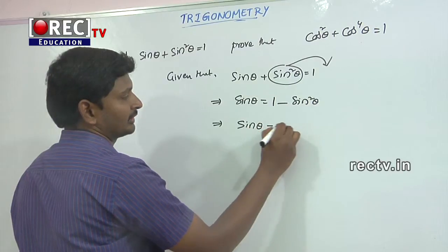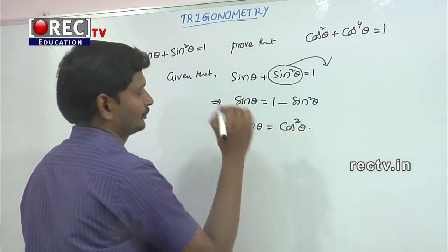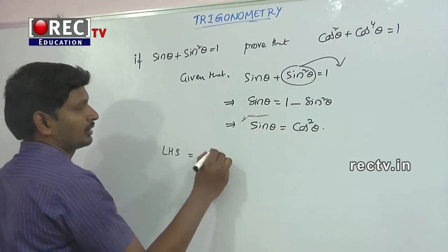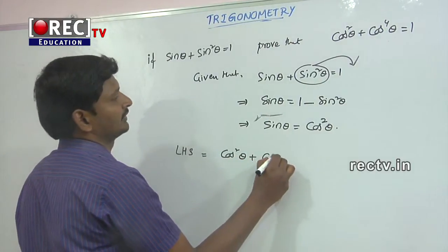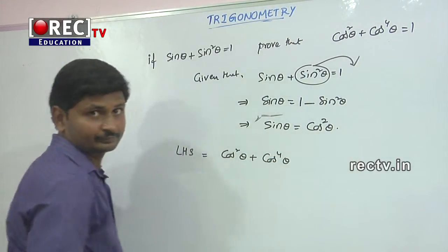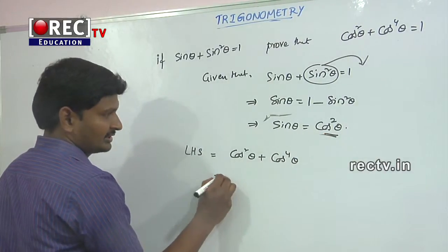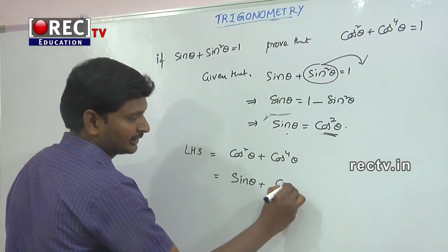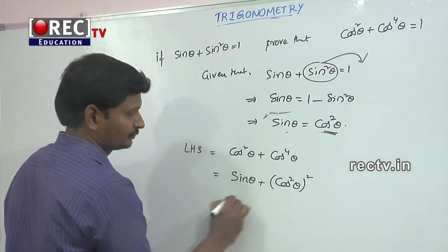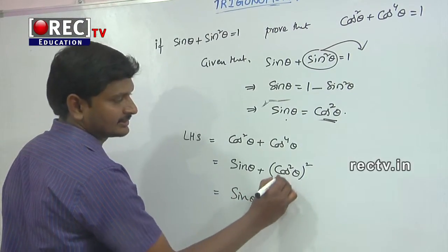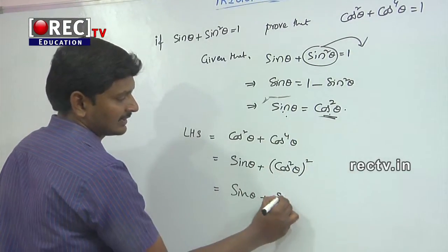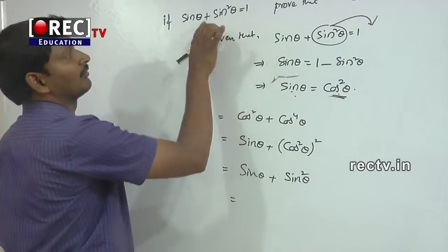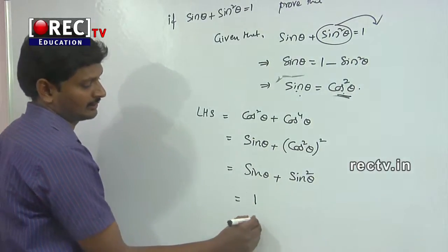Now the LHS is cos²(θ) + cos⁴(θ). Since sin(θ) = cos²(θ), we substitute: cos²(θ) = sin(θ), and cos⁴(θ) = (cos²(θ))² = sin²(θ). So LHS = sin(θ) + sin²(θ), and from the given condition, sin(θ) + sin²(θ) = 1, which equals the RHS. Hence proved.